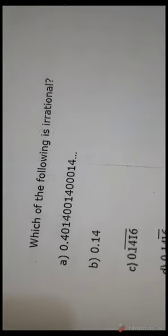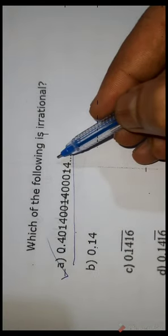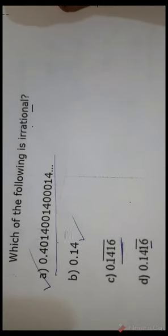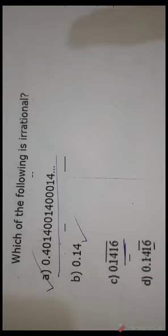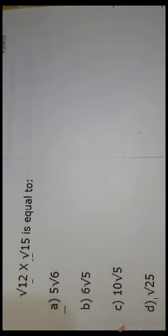Question number 59: which of the following is an irrational number? The first option is correct because its decimal representation is non-terminating and non-repeating. The other options either terminate or have repeating decimals (indicated by a bar). The definition of an irrational number requires non-repeating and non-terminating decimals. So A is the correct answer.